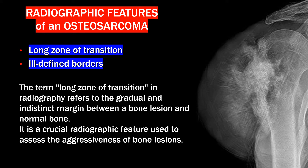The term 'long zone of transition' refers to the gradual and indistinct margin between a bone lesion and normal bone. It is a crucial radiographic feature used to assess the aggressiveness of bone lesions. Ill-defined borders refer to an inability to clearly distinguish the borders or cortex.